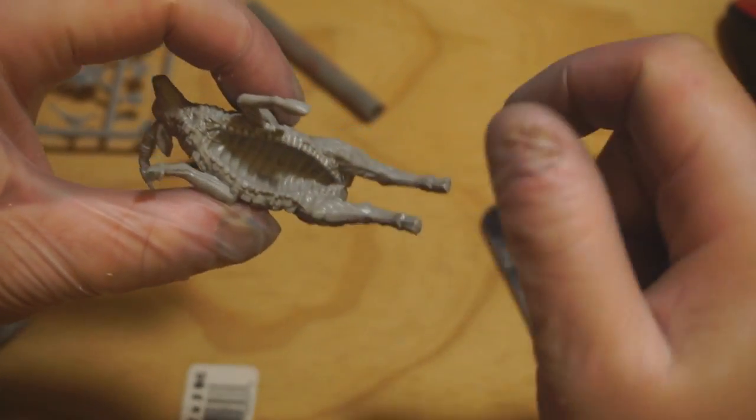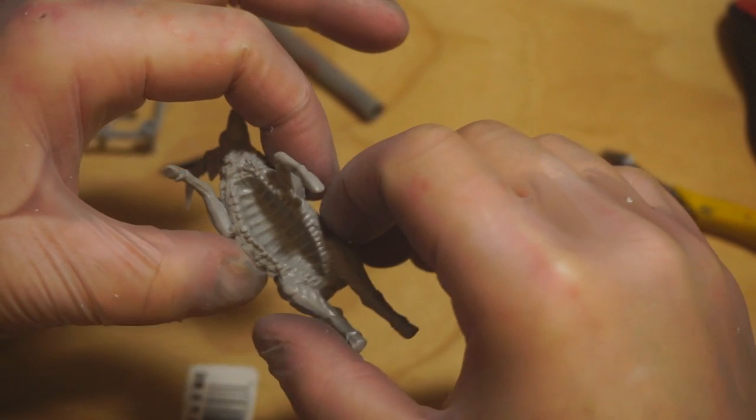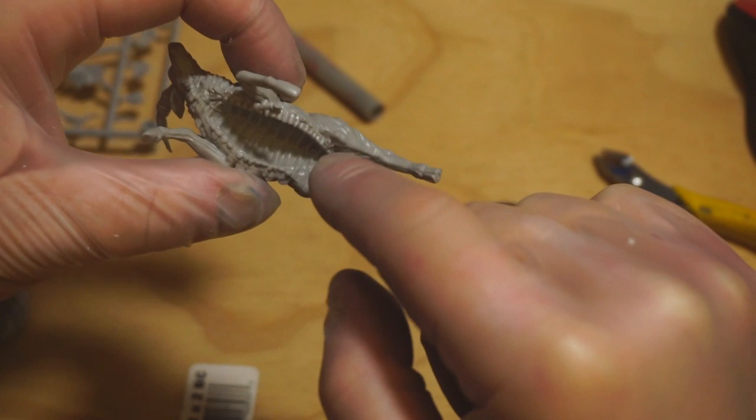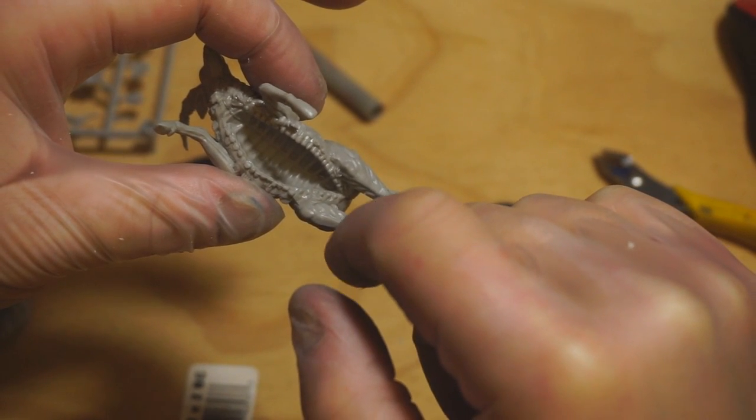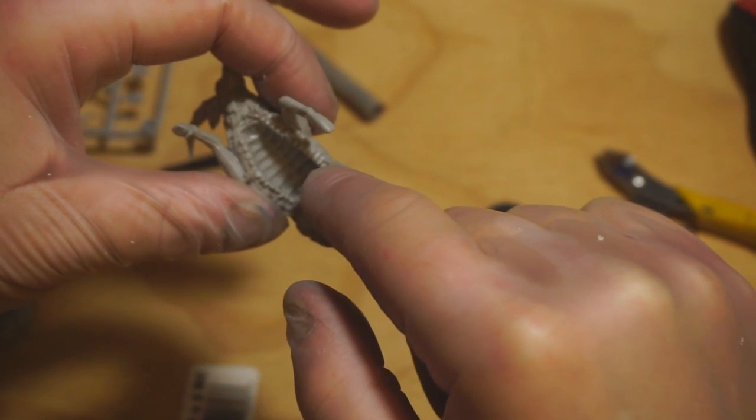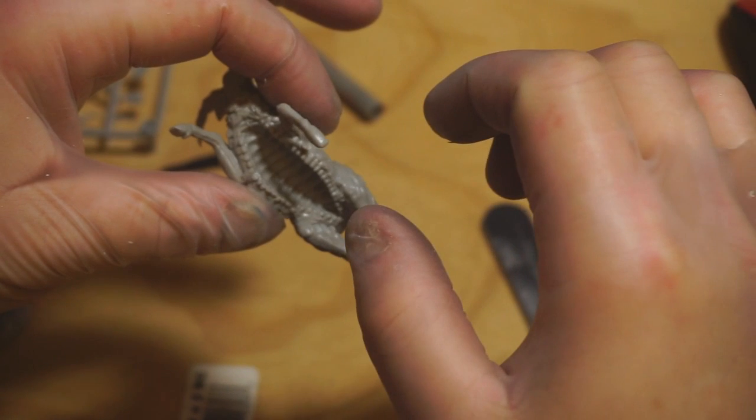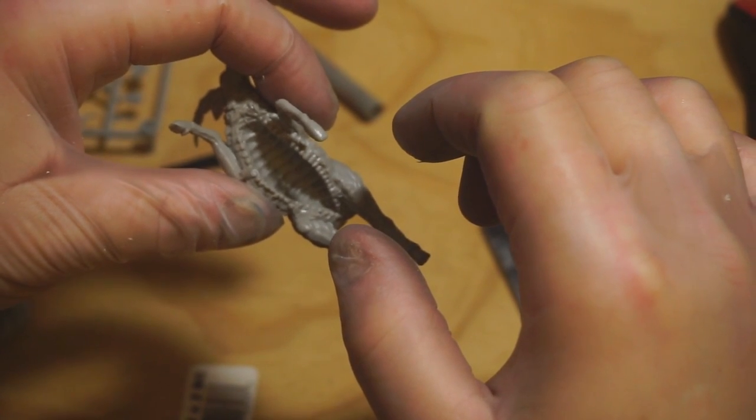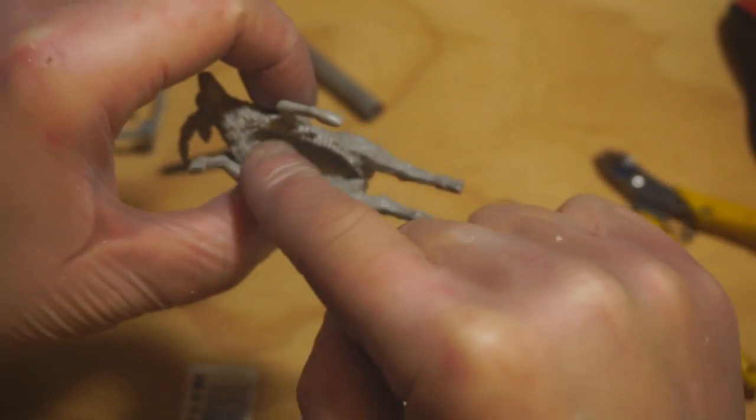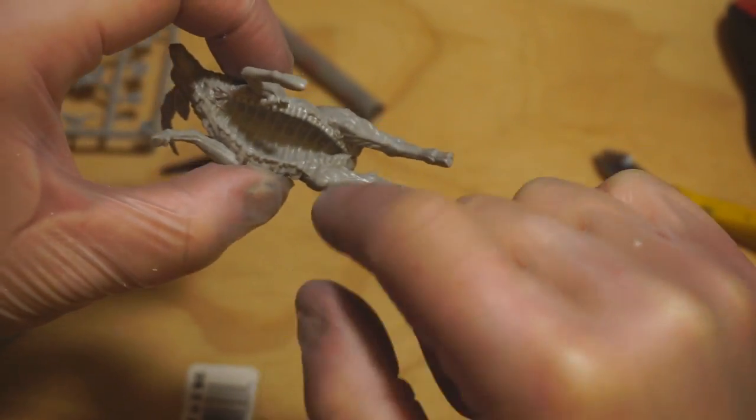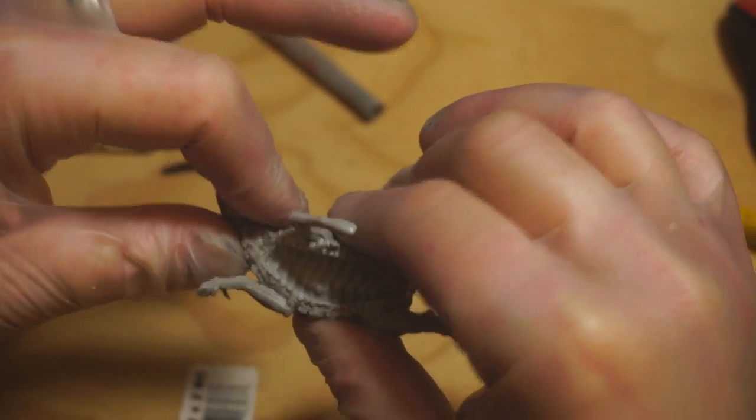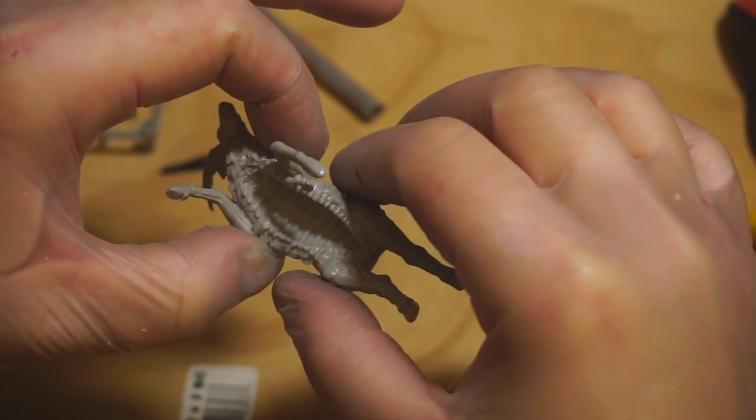This middle seam here does present something of a problem. The easiest way I've found to deal with that is to fill it with putty to kind of smooth over the seam. I've experimented with using a dremel to try to hollow it out carefully, but it ends up creating as many problems as it solves. So putty seems to be the best method for smoothing that out.